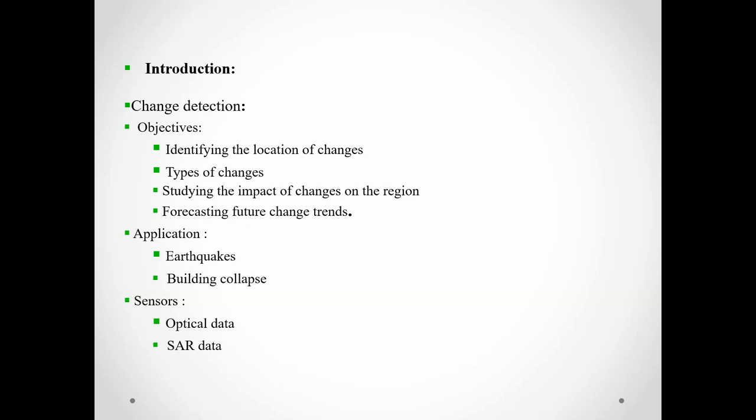Earthquake causes massive changes which can be determined with appropriate speed, and building collapse is one of the most common causes of human fatalities during earthquakes. For disaster relief missions, rapid identification of affected areas is critical. The quality of change detection results is influenced by sensors. Optical images containing information about spectral behavior of materials are widely used, and in recent years, synthetic aperture radar (SAR) sensors, which can gather backscattering pulses regardless of weather conditions or cloud cover, have been increasingly utilized. We use both types of data in our research.